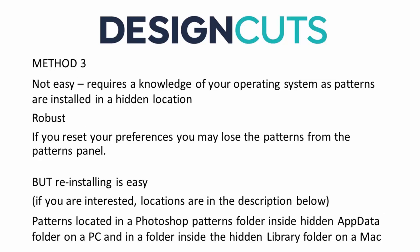Method three is not quite so easy. It requires a knowledge of your operating system because the patterns are going to be installed in a location which is typically hidden on either your Mac or PC. It is, however, a very robust method. If you reset your preferences you'll probably lose the patterns from the panel, but reinstalling them is easy. The patterns are located in a hidden AppData folder on PC or a hidden Library folder on Mac. Those hidden locations are listed in the description below.